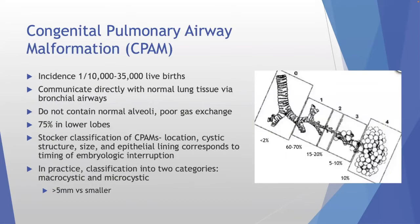CPAMs occur in 1 in 10,000 to 35,000 live births. They communicate directly with normal lung tissue via bronchial airways — which puts children at risk for infections, and an infected CPAM makes surgery much less enjoyable. They do not contain normal alveoli and have poor gas exchange. 75% occur in the lower lobes. The Stocker classification describes location, cystic structure, and epithelial lining — most are type 1 CPAMs.